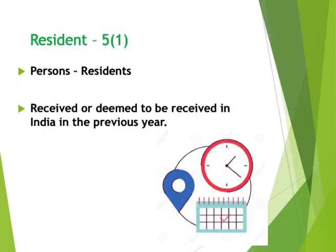First, for a resident person, the income charged to the income tax department must be received or deemed to be received in the previous year, in India. The place and time are very important to determine tax liability. There are three key terms to understand: accrued, time, place, and received. If you are earning somewhere abroad and claiming you will pay tax, it is not that simple - the concepts of accrual, time, place, and receipt all matter.